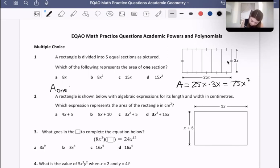that's going to be 75x squared divided by five, which is going to be 15x squared. If we do 75 divided by 5, we get 15, and the x squared just stays as is. So therefore, our answer is D. The area of just one section here is going to be 15x squared. Very good. Let's move on.